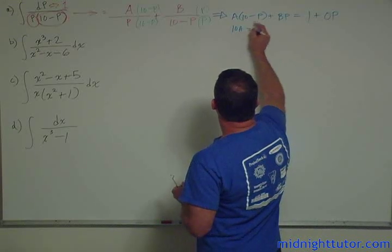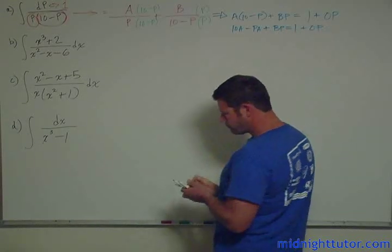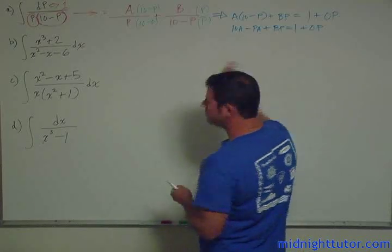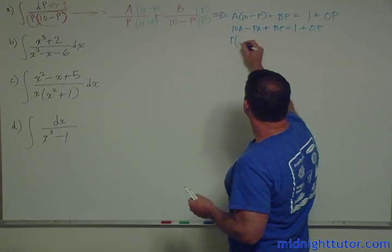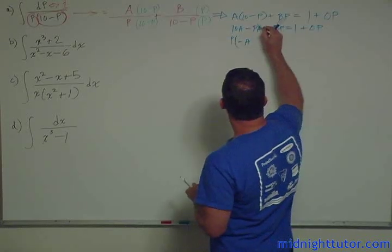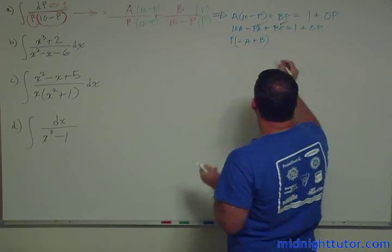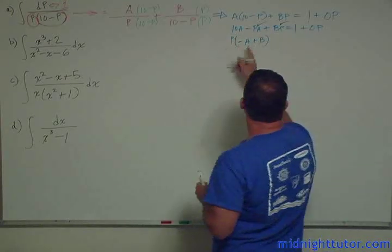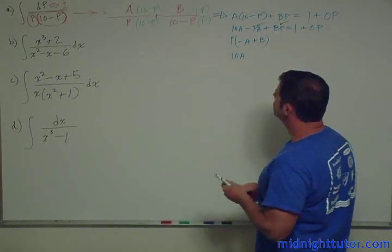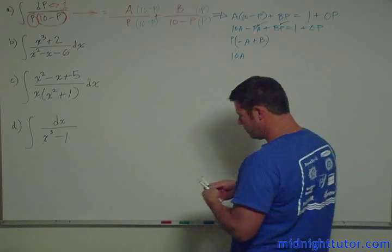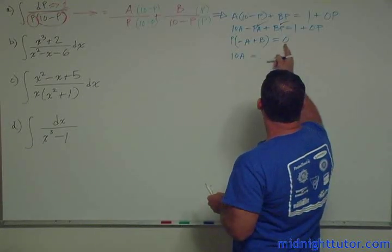So let's expand. We have 10a minus pa plus bp equals 1 plus 0p. From this you can see then, let's collect all the like terms, all the p terms. So we have minus a plus b. And now let's collect all the other terms that don't have p's. We have 10a. So now we just have to solve.